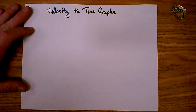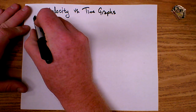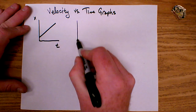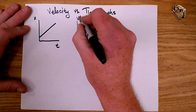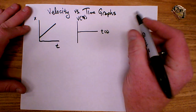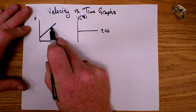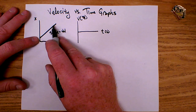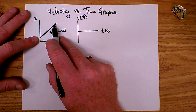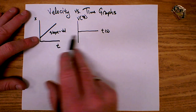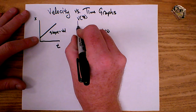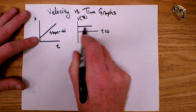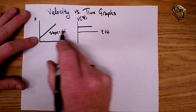Now let's take a look at velocity versus time graphs. If I start with an object that moves with constant velocity, its position-time graph is linear. If I want to draw the velocity versus time graph — velocity is measured in meters per second, time in seconds — I can see from the position-time graph that the slope represents the velocity. It is a constant positive slope, meaning a constant positive velocity. On a graph of velocity versus time, a constant positive velocity is going to look like a horizontal line, representing that as time goes on, the velocity stays the same positive value.